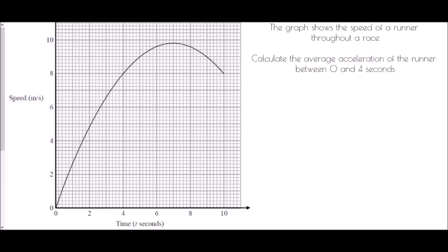To begin, I want to look at what a velocity-time graph looks like and some key features of it. The y-axis is speed and the x-axis is time. The graph demonstrates the change in speed as time goes on. We have a curve shape here, which means it's not a straight line — we don't have a constant acceleration. The shape is all about acceleration: change in speed.